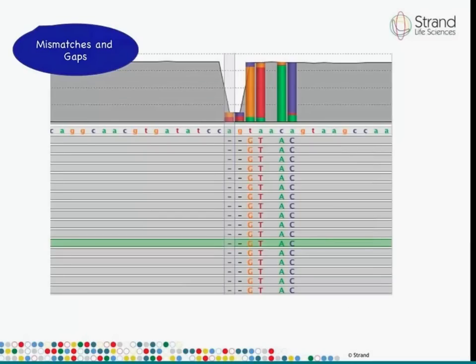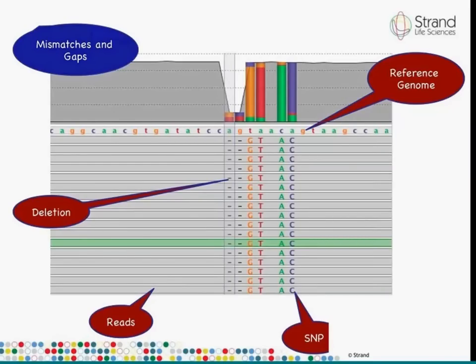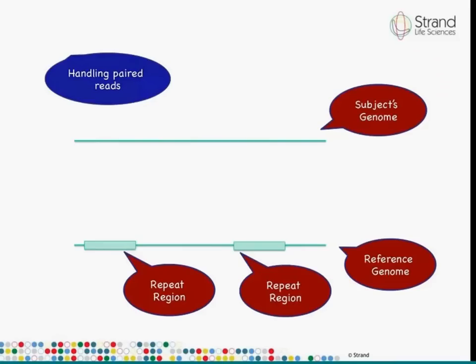What issues must an alignment algorithm consider? The first is mismatches and gaps. Here you have the reference genome and the reads, and you can see that the alignment has had to introduce gaps because there is potentially a deletion in the subject's genome relative to the reference genome. Or there could be mutations — single-point or multi-point mutations. So one key requirement is the ability to introduce gaps and mismatches while matching reads to the reference.